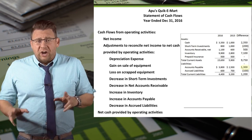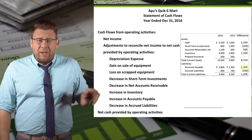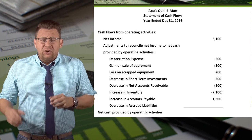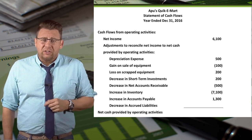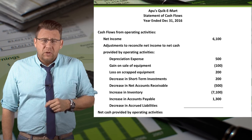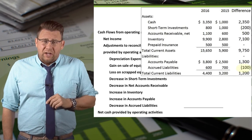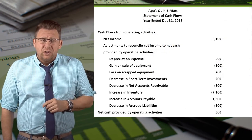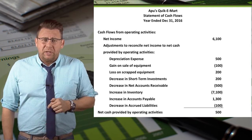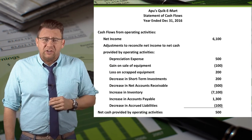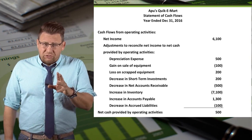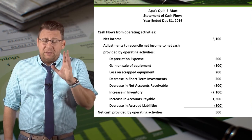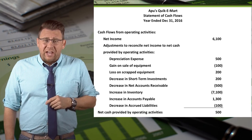Now we move to changes in current liabilities. Accounts payable increased $1,300, so we add $1,300 to the Adjustments section, since we add increases in current liabilities. Accrued liabilities, our final current liability, decreased $100, so we deduct $100 in the Adjustments section. For a more detailed explanation, please see the video called Adjustments to Cash Flows Current Liabilities.